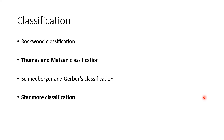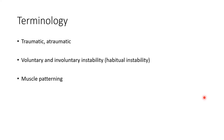Moving on to classification: there are a few classification systems, but the main ones are Rockwood, Thomas and Matsen, and Stanmore. Some terminology you need to know includes traumatic, atraumatic, voluntary, and involuntary instability — both known as habitual instability — and muscle patterning. Muscle patterning is how muscles act synergistically to perform a certain movement.